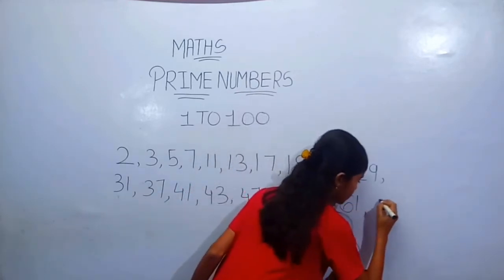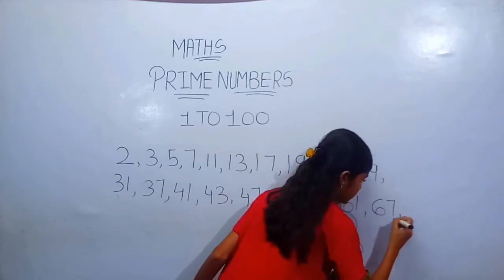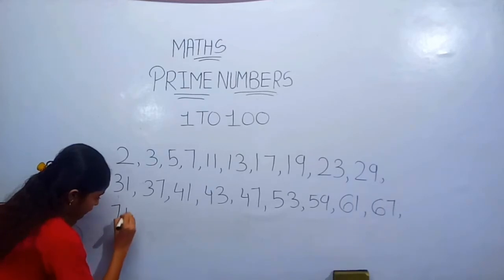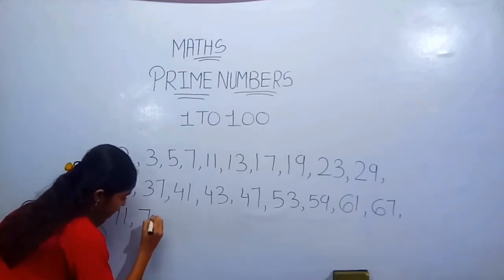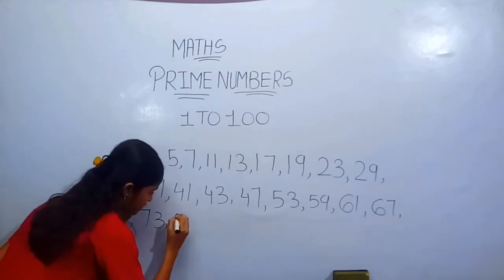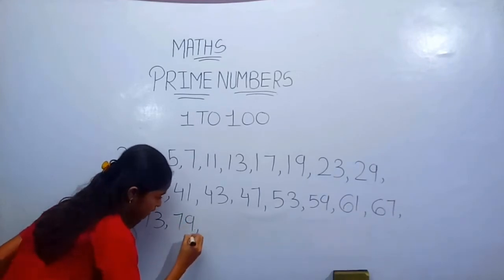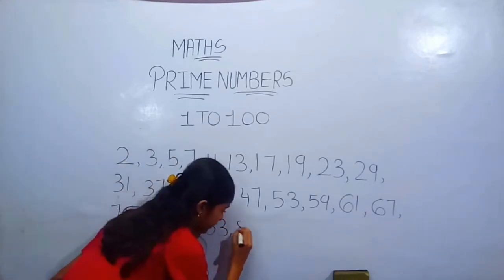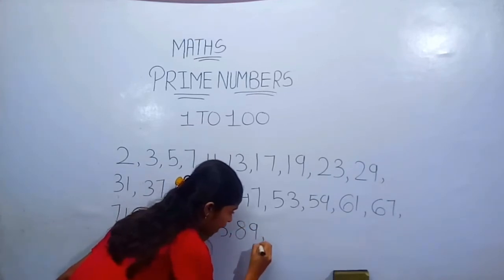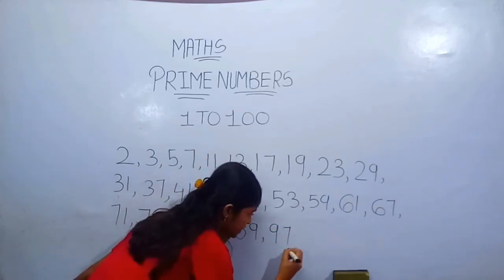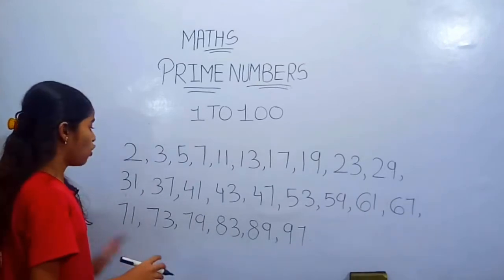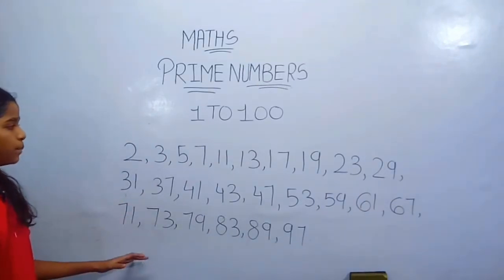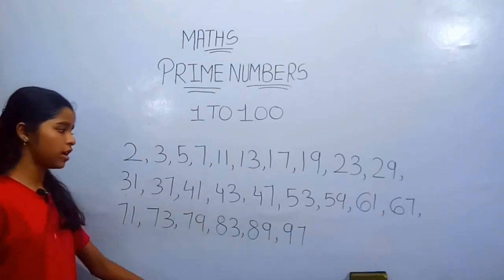61, 67, 71, 73, 79, 83, 89 and 97. These are all total 25 prime numbers from 1 to 100.